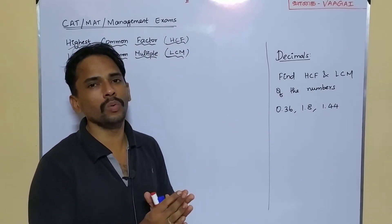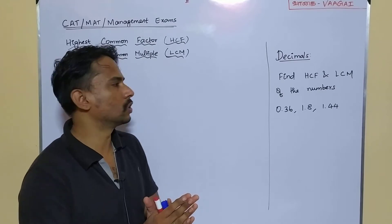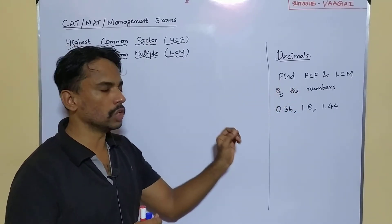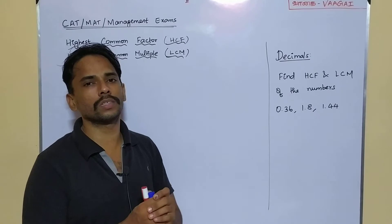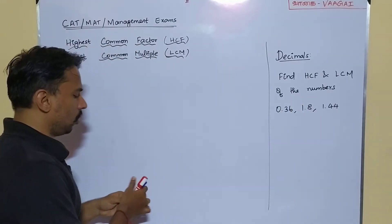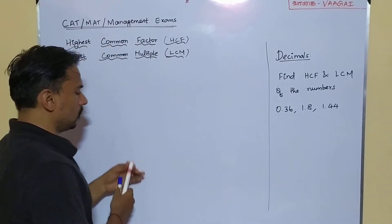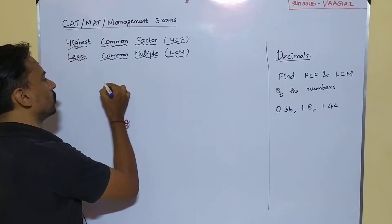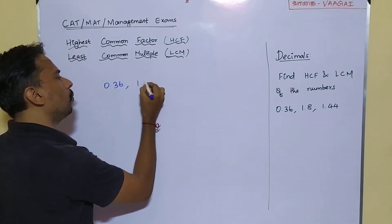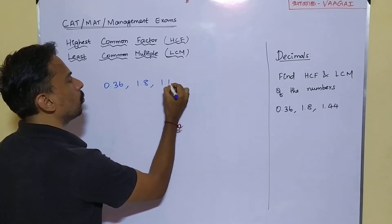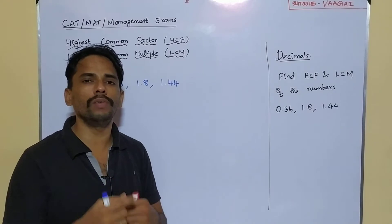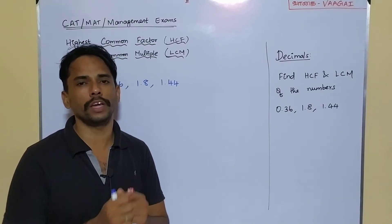Here we have a question. Let us try to find the answer. Find the HCF and LCM of the numbers 0.36, 1.8 and 1.44. So we have three numbers here: 0.36, 1.8 and 1.44. All three numbers involve decimal expressions.